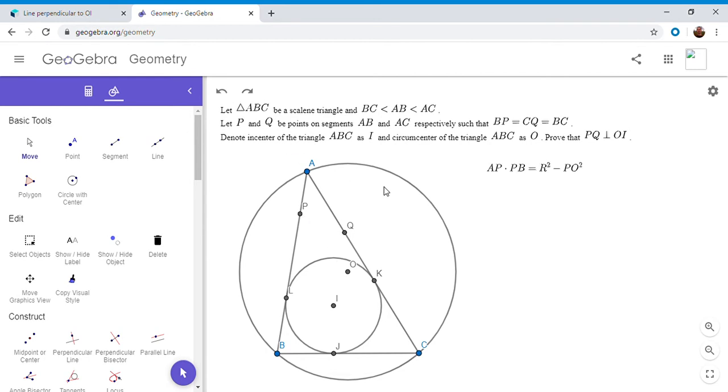So I'm going to start by writing that. So you have AP times PB is R squared minus PO squared. So this proof is probably going to be a lot more algebraic than most of the other proofs I've had on my channel. Those have mostly been more geometric using projective geometry or cyclic quadrilaterals or stuff like that. But this one is mostly algebraic.